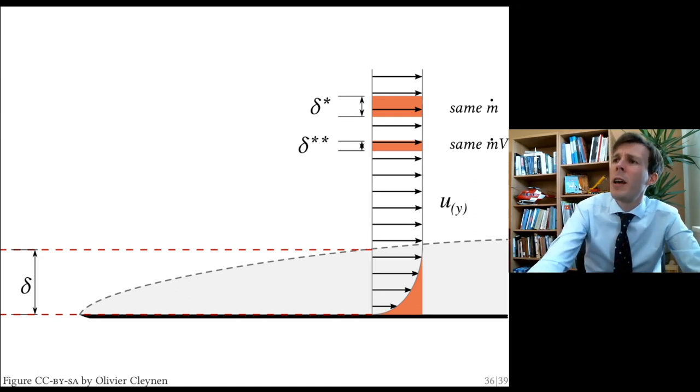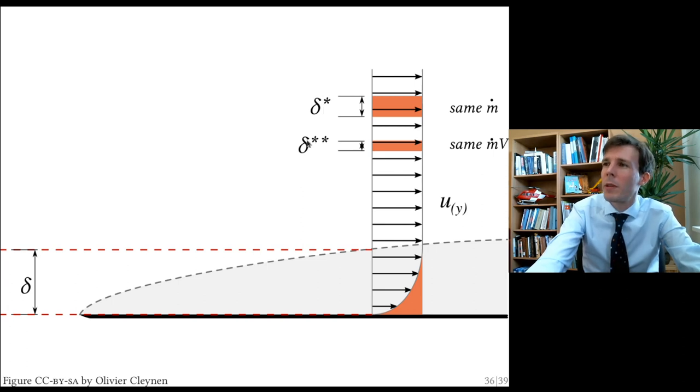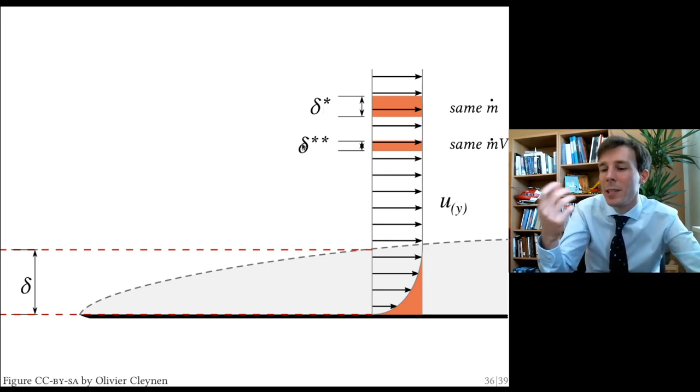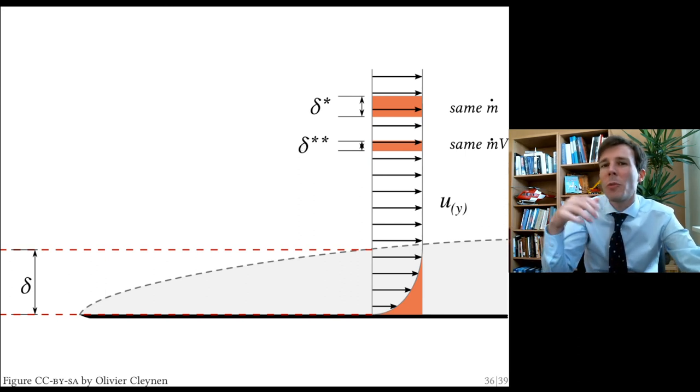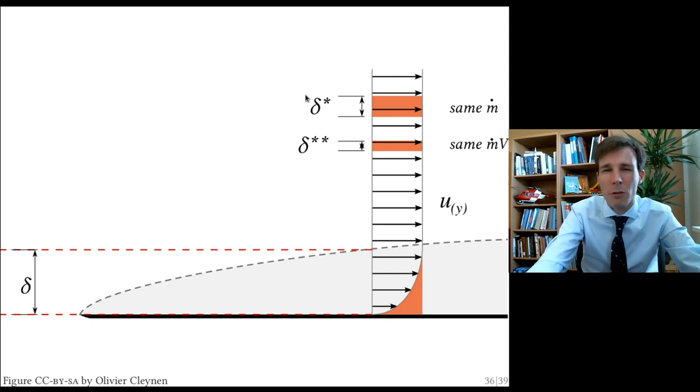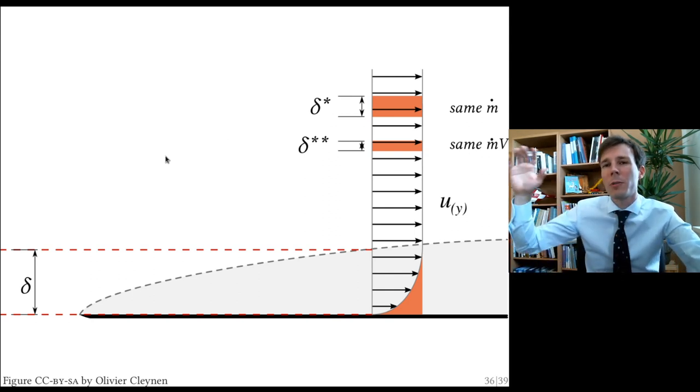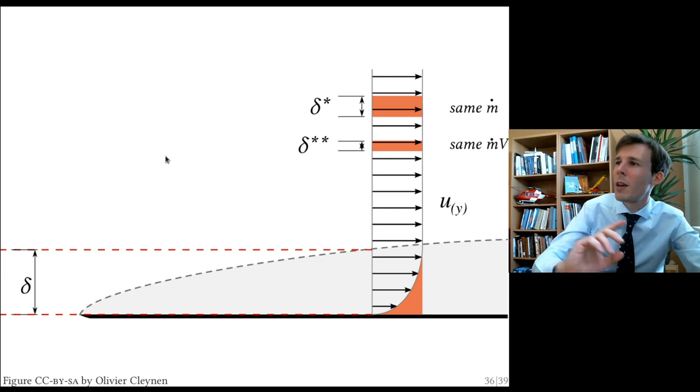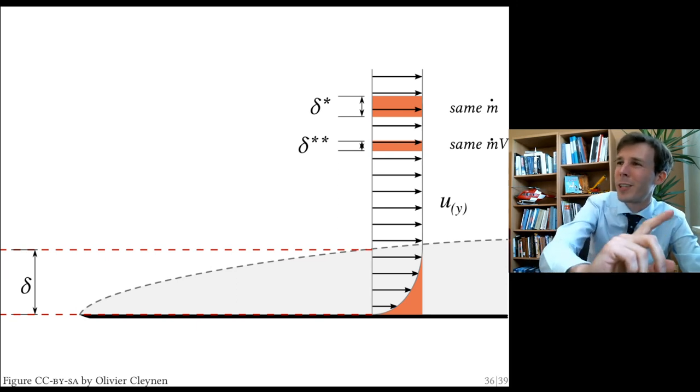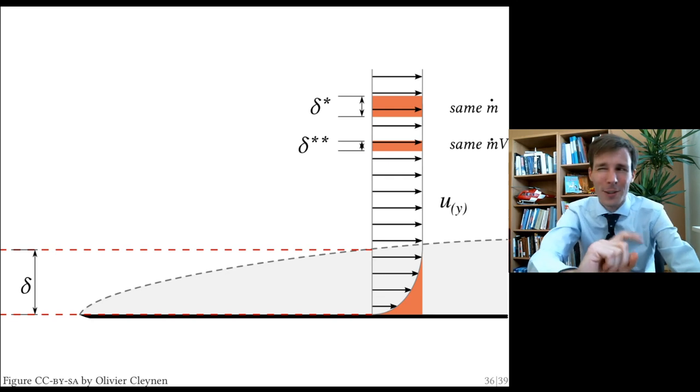So quite an abstract notion. But it turns out these two parameters, even though they're more difficult to grasp and less easy to visualize, they're much more useful in quantifying the behavior of the boundary layer. Especially the ratio of those two is a good predictor of how well the boundary layer sticks or not to surfaces. So this is the reason why fluid dynamicists always argue about which delta is the best. Delta, delta star or delta star star.